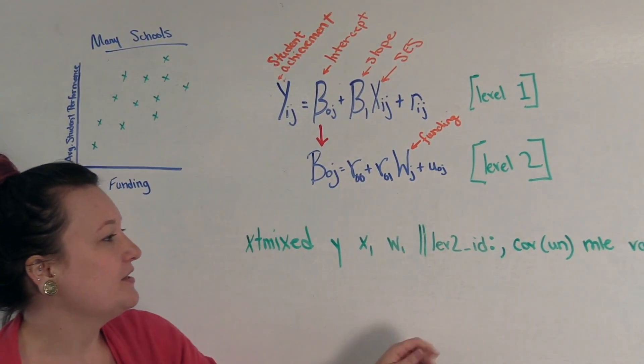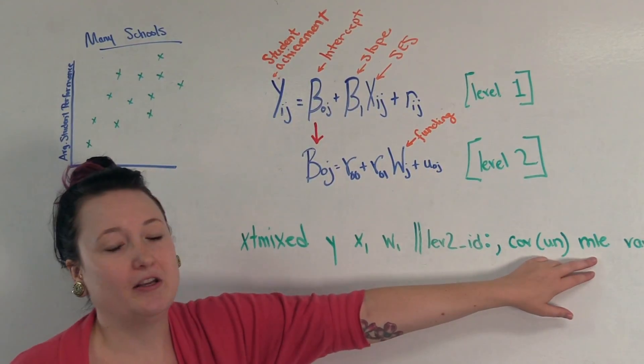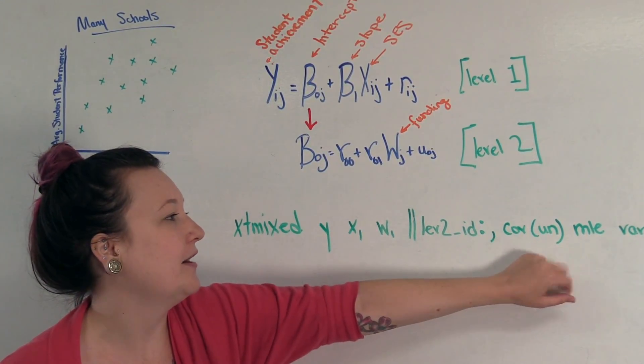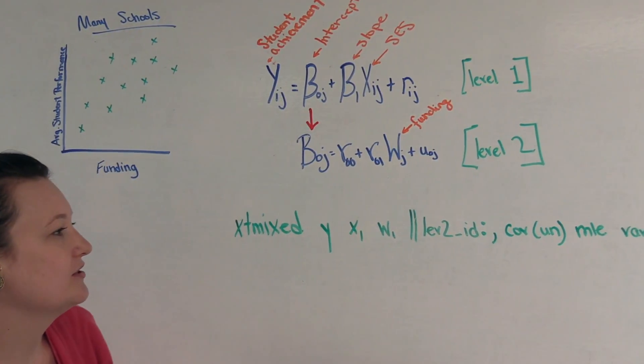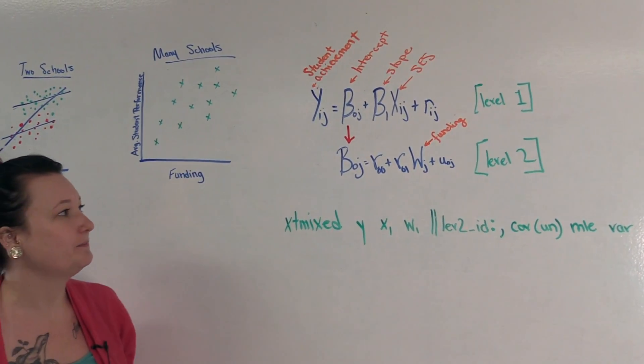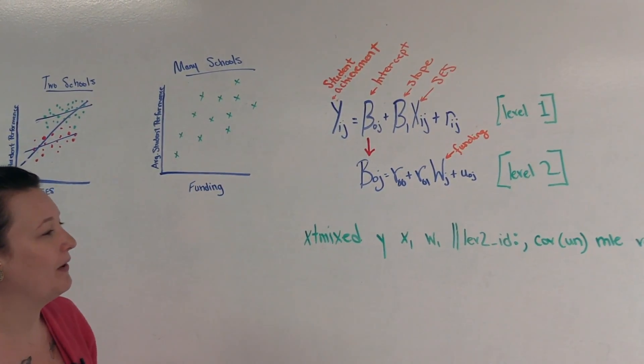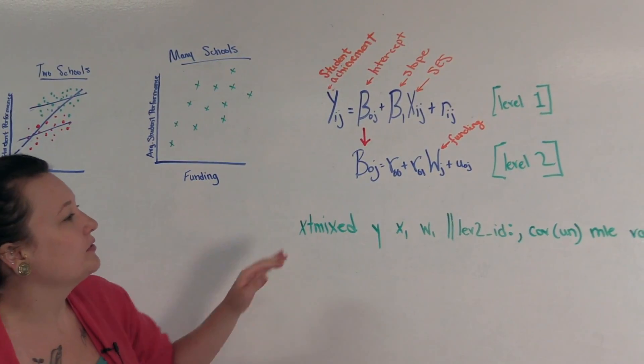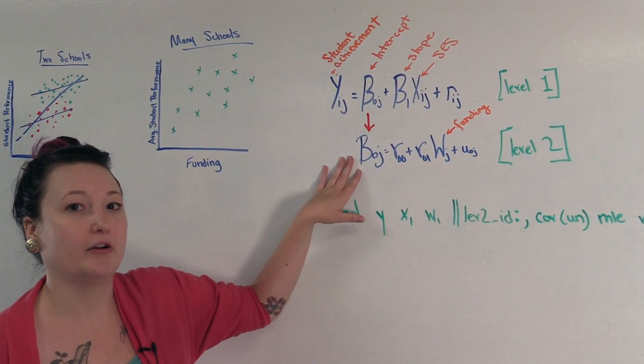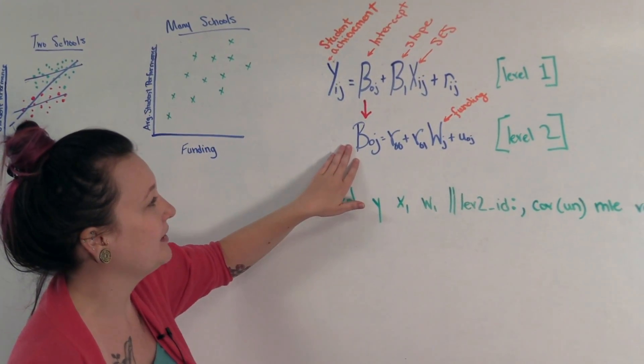And then some options, which just would use the MLE estimate command standard for multi-level models. And then some instructions on the variance and covariance structures. Many of these are just the defaults. One thing to note, however, is that when we're talking about the intercept, we may want to give this some more meaningful value. So let's talk a little bit about what the intercept means.